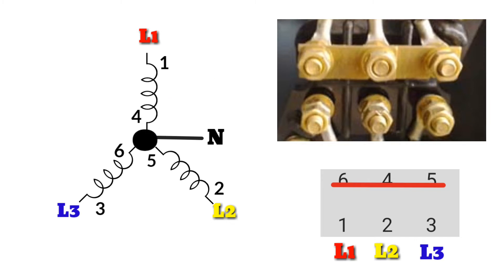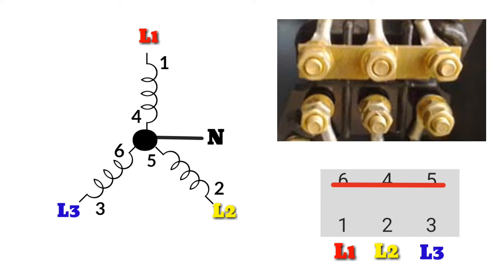The three conductors meeting at the star point are replaced by a single conductor known as the neutral conductor. Star connection is a method of connecting polyphase circuits in which one end of each phase line is connected to a common neutral point, that may be connected to earth as protection against lightning, or to a wire to which all other neutral points of the system are connected.